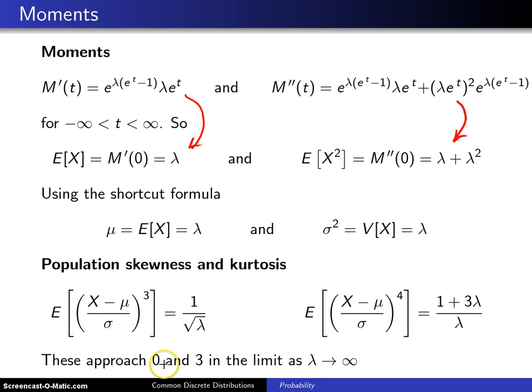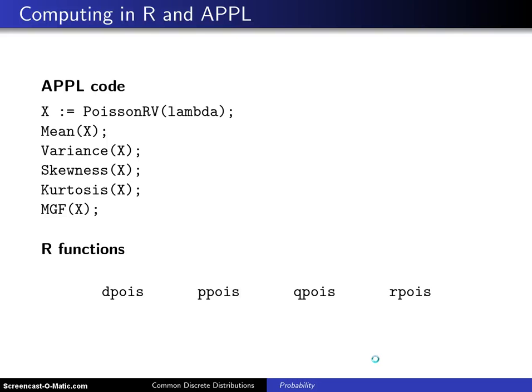The thinking behind that is as lambda gets larger, skewness going to zero implies it is approaching a symmetric distribution. Also the zero and three we've seen before - it will be fairly bell-shaped. This confirms that the Poisson will approach a bell-shaped distribution as lambda increases.